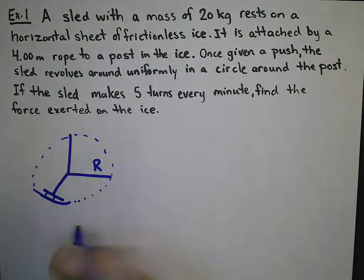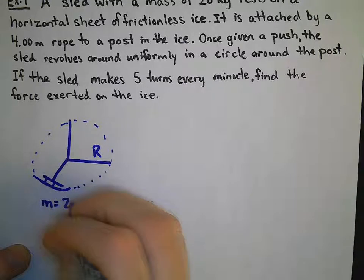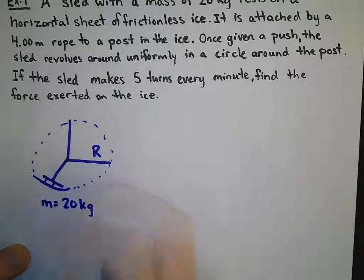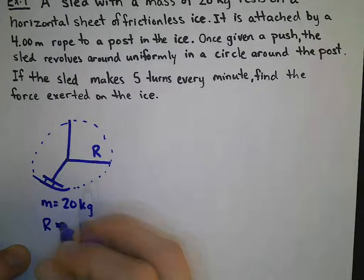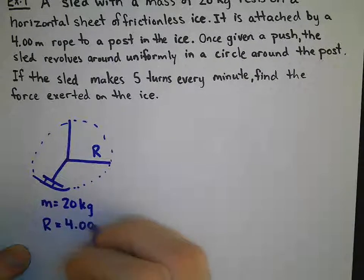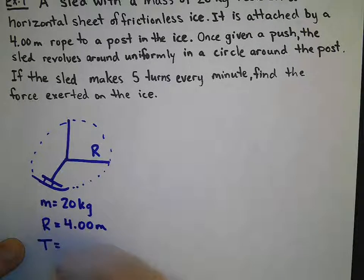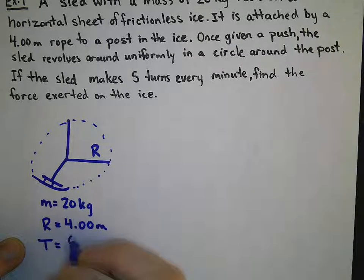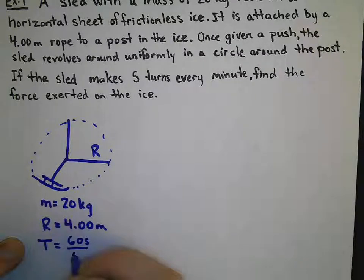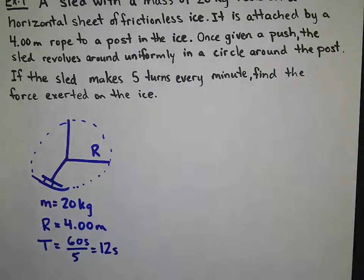And given here, we know that our mass is 20 kg. Our radius r, as given in the question, is 4.00 m. And my period t is 5 turns every minute. If there is 60 seconds in a minute and 5 turns, that tells me my time it takes to complete one turn is 12 seconds.